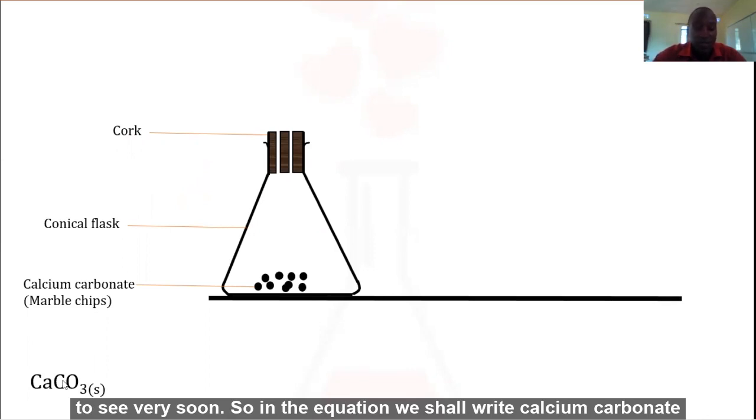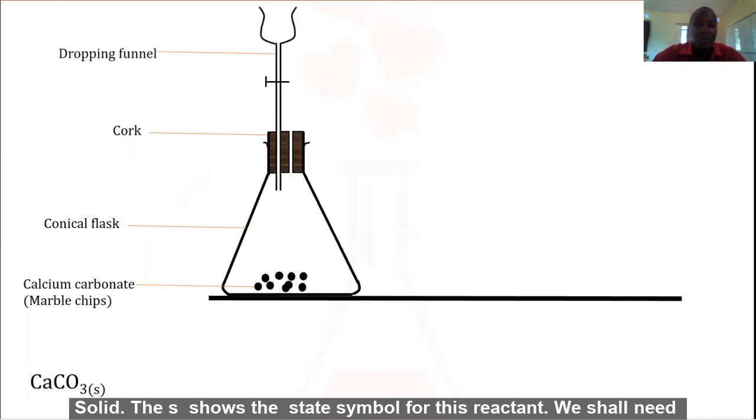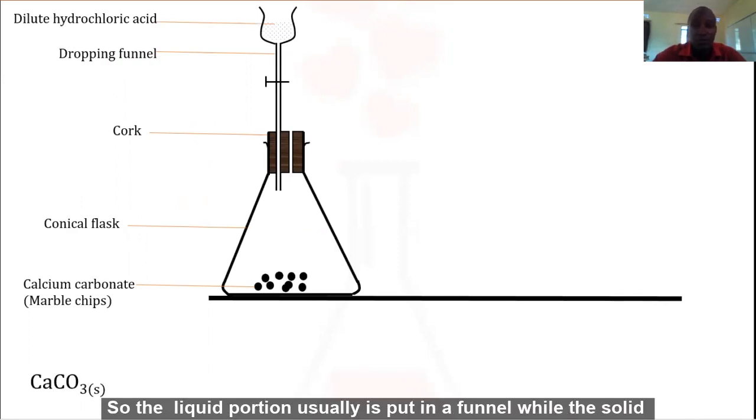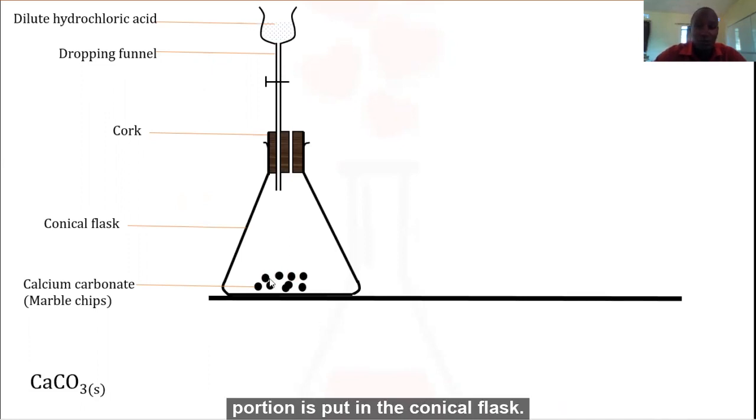In the equation we shall write calcium carbonate solid. The S shows the state symbol for this reactant. We shall need a dropping funnel. In the dropping funnel we shall put our dilute hydrochloric acid. The liquid portion usually is put in a funnel while the solid portion is put in the conical flask.